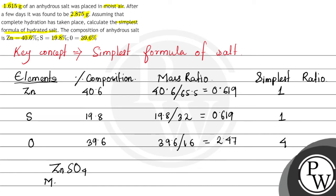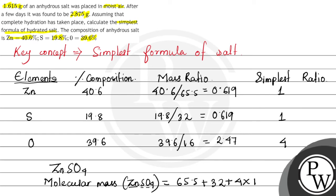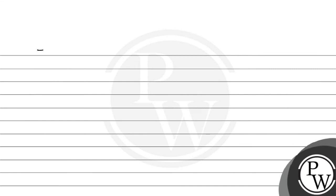Now we will find out the molecular mass of ZnSO4. To calculate the molecular mass of ZnSO4, we add the atomic masses of all elements: zinc is 65.5, plus sulfur is 32, plus 4 × 16 for oxygen (since 4 oxygen atoms are present). Adding all of these gives us 161.5 grams. And from the question, what is given is 1.615 gram of anhydrous salt.